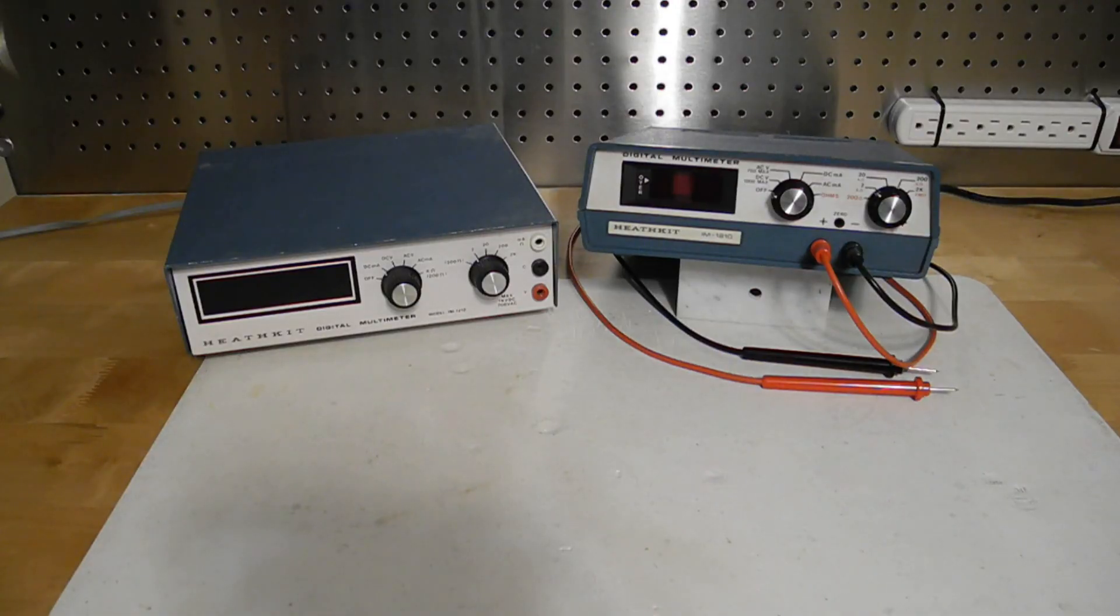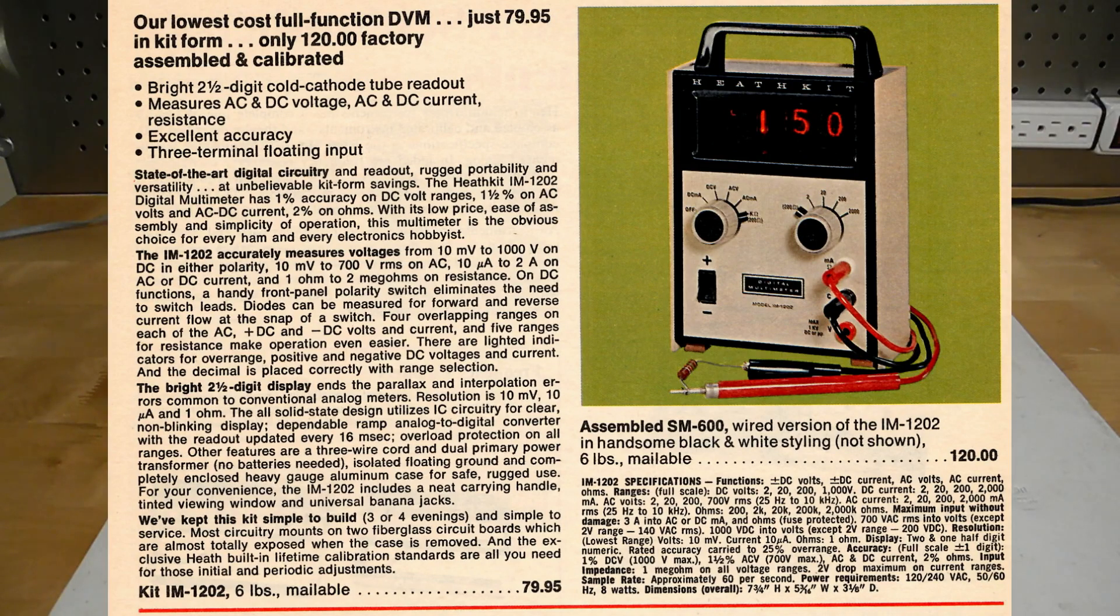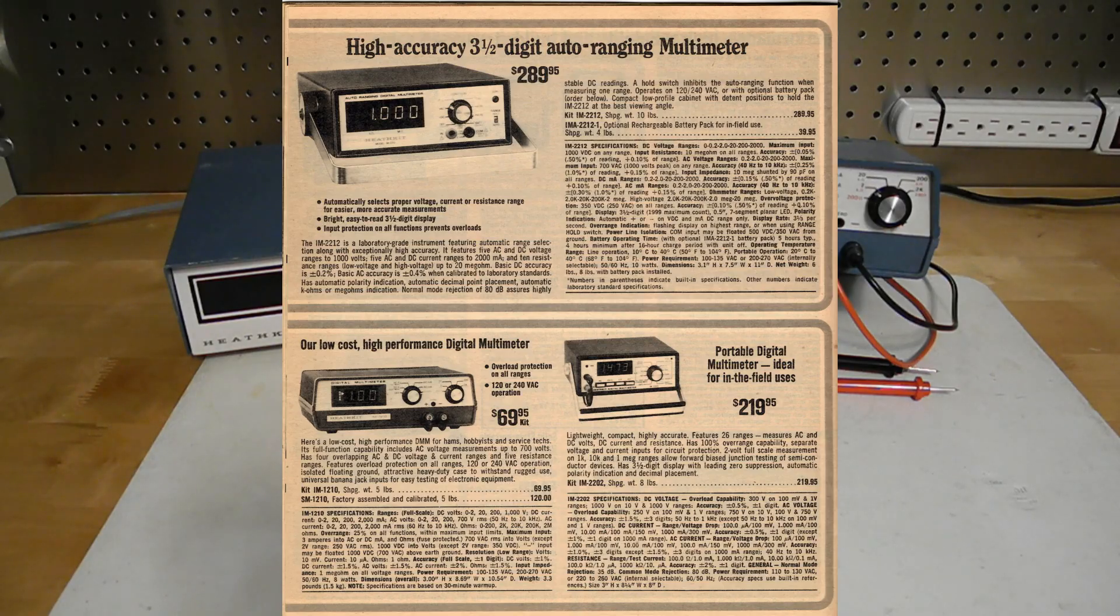In 1971, Heathkit introduced their first digital multimeter kit, the IM1202. It was sold until 1978. A three and a half digit meter, it was quite expensive, $250 in 1976. Heathkit also offered lower cost two and a half digit meters, starting with the IM1202 in 1973. At any given time, Heathkit typically offered several models of DMMs with different pricing and performance. The main characteristic that distinguished them was the number of display digits as well as features.